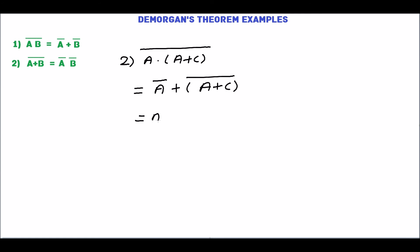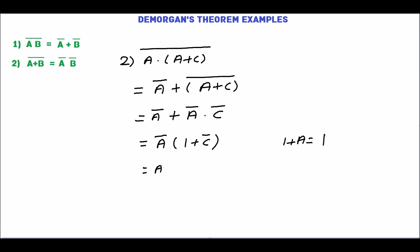Write A complement as it is, plus A plus C complement can be written as A complement into C complement. In both terms, A complement is common, so take it outside. So, 1 plus C complement. 1 plus A equal to 1, so A complement into 1 plus C complement is 1. A into 1 equal to A, so A complement into 1 equal to A complement. This is the final answer.